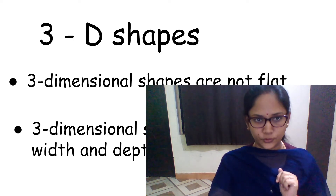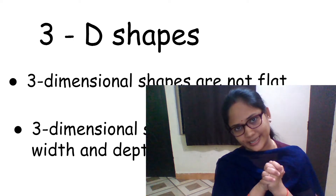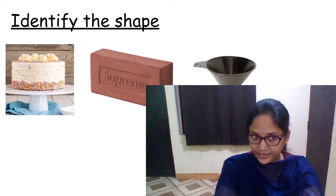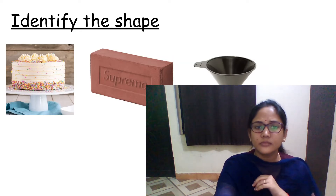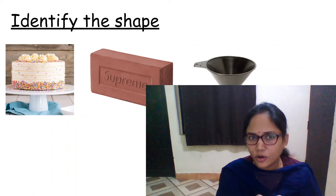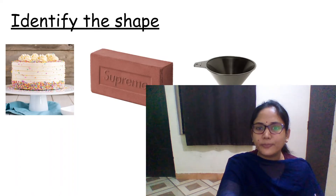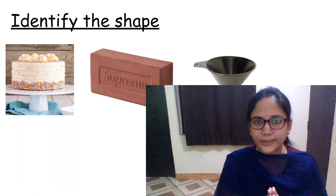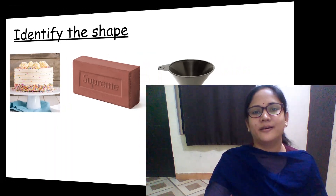Now I have an activity for you. You will see the question, write down the answer somewhere, and then we will discuss it on WhatsApp. You have to identify the shape. The first one is a cake — see the cake carefully and write down what shape it is. You can pause the video and write down the 3D shapes. What is this funnel? Write down what shape it is. So you pause the video, write down the shapes, and then we will be discussing it on WhatsApp. I hope that you have understood what are 3D shapes. I will see you in the next video. Till then, keep learning. Bye-bye.